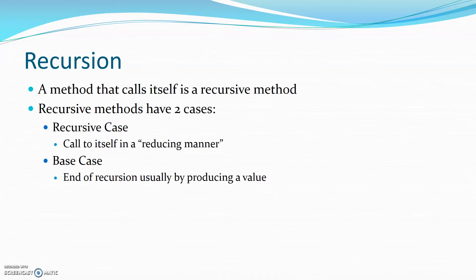A recursive method is one that calls itself. When it calls itself, we're usually dealing with data of some type — whether it's a value or whether it's a structure — and we're starting off with a larger piece. The idea is that when we do a recursive call, we're taking a smaller piece, either a smaller value or a smaller piece of the structure.